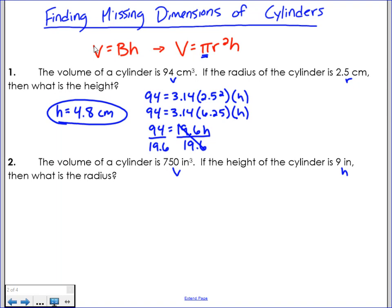So let's do the same thing. Fill in what we know. I know that the volume is 750. I know pi is 3.14. I do not know what r is this time, so I'm going to leave r as just r squared. But I do know that the height is 9 inches.